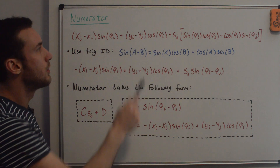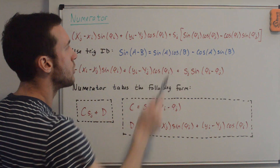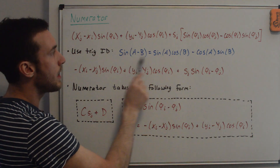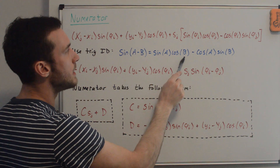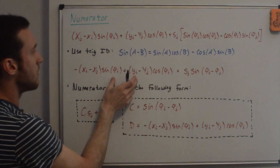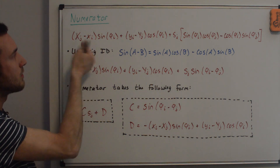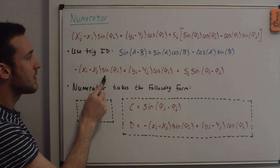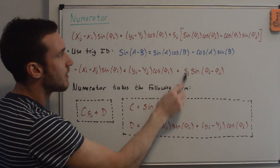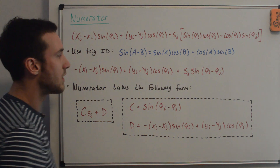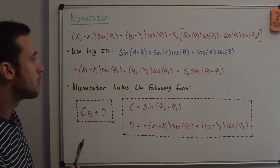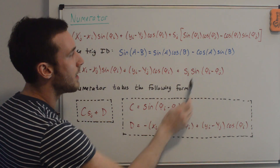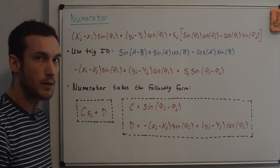Taking this expression, we simplify the s_j portion using the trig identity sin(a - b) = sin(a)cos(b) - cos(a)sin(b), with a = phi_i and b = phi_j. Rewriting with a negative sign out front to match the y term form, the s_j coefficient simplifies to sin(phi_i - phi_j). The numerator therefore takes the form C·s_j + D, where C = sin(phi_i - phi_j) and D is the remaining constant terms.